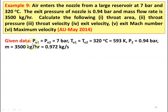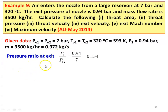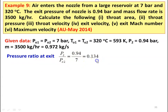Given data: stagnation pressure PO1 equal to PO2 equal to 7 bar, stagnation temperature TO1 equal to TO2 equal to 320 degree Celsius which is 593 Kelvin, exit pressure P2 equal to 0.94 bar, mass flow rate equal to 3500 kilograms per hour which is 0.972 kilograms per second. The pressure ratio at the exit: P2 by PO2 equal to 0.94 divided by 7 equal to 0.134.